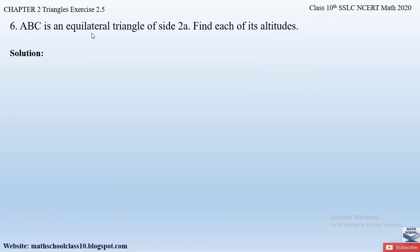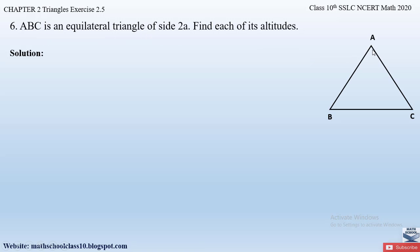Question number 6 from exercise 2.5, chapter 2 Triangles says: ABC is an equilateral triangle of side 2a — find each of its altitudes. They have not given us a figure, so let us first draw triangle ABC, which is an equilateral triangle where all three sides are equal. Side AB is 2a, side BC is 2a, and side AC is 2a.